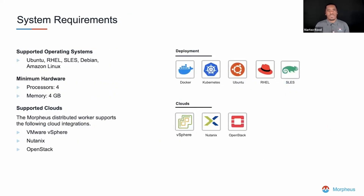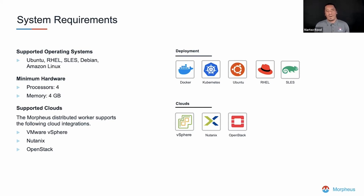Let's take a look at some of the system requirements for the Morpheus distributed worker and ways in which it can be deployed. It is a lightweight agent that can be installed in a given environment. It can be run as a Docker container, on Kubernetes, or as an installable package on operating systems like Ubuntu, Red Hat Enterprise Linux, SUSE Linux Enterprise, and a few others. The minimum hardware requirements are four processors and four gigs of memory, as listed in the Morpheus documentation.